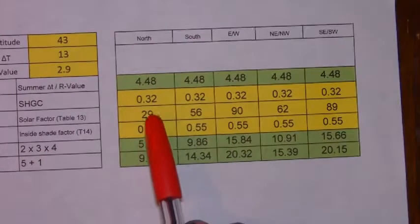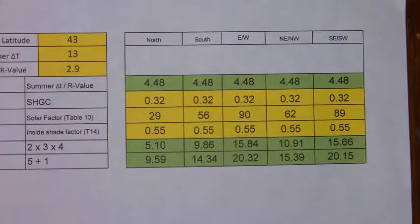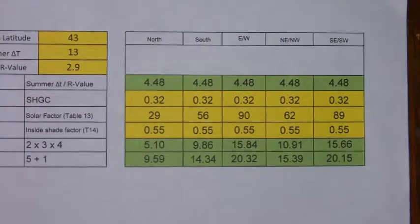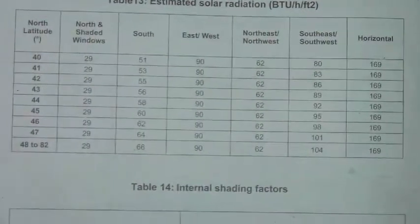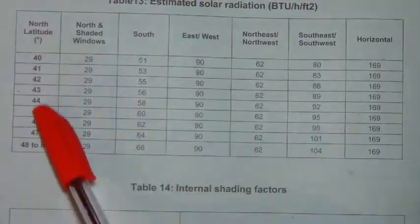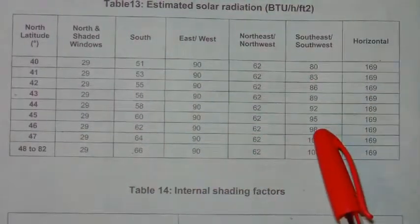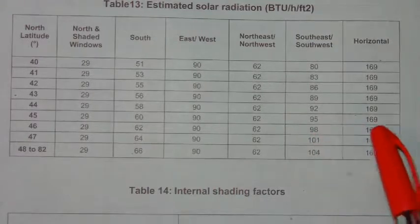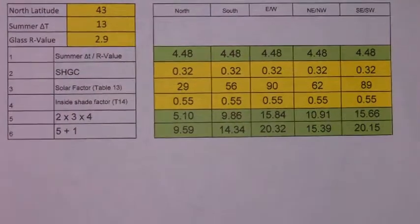That factor is then input onto the worksheet in this location. Next you have your solar factors, and the solar factors are found on table 13. Depending on the latitude and the direction, you simply pull the factors off this table and input them into the calculation.